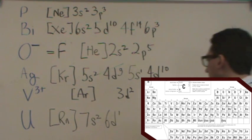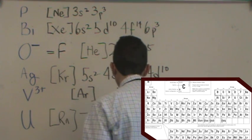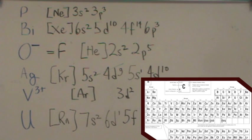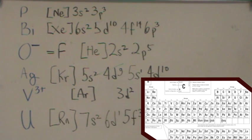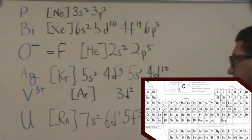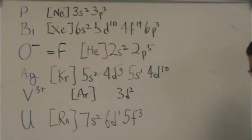And specifically, it's in the 5F block. You count over 3. Thorium, protactinium, and then uranium. So you should get [Rn] 7S2, 6D1, 5F3. Now, there's a lot of exceptions in here in the F block. I'm not going to have you learn all the possible exceptions. There are a bunch. But this is the general format you would use. Let's move on.